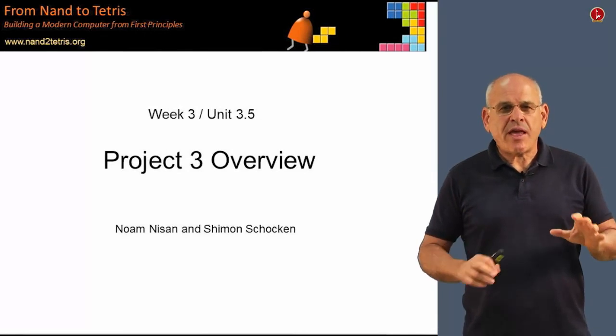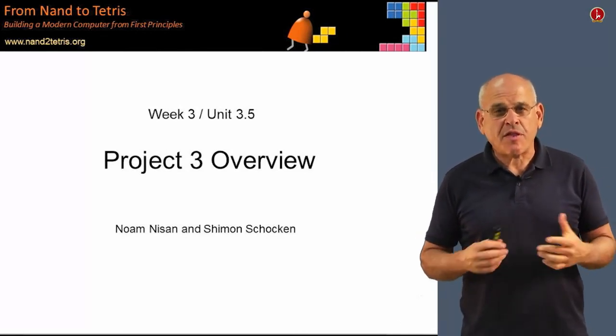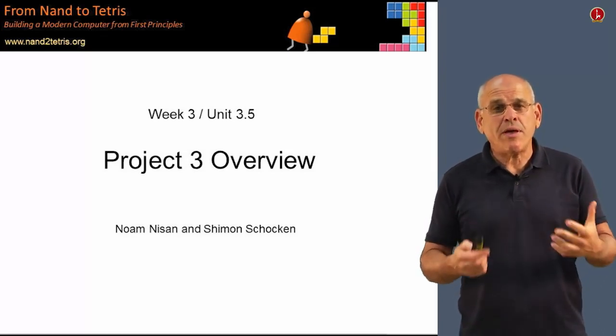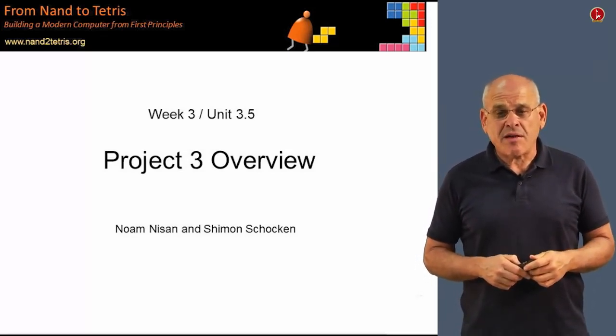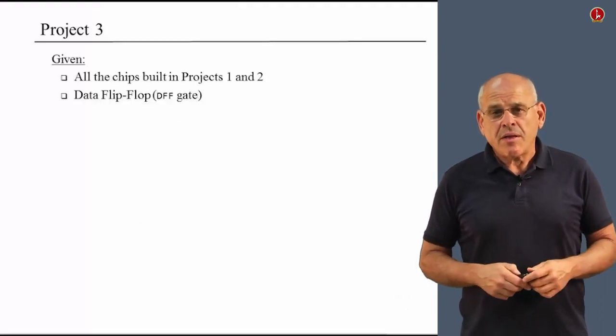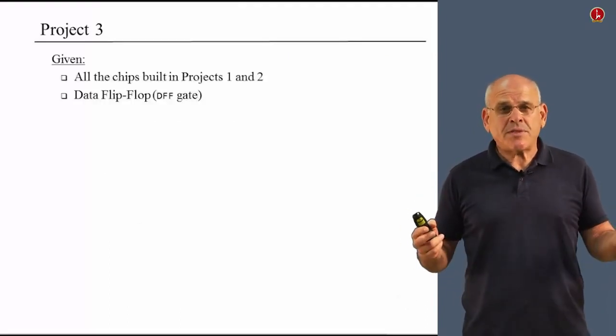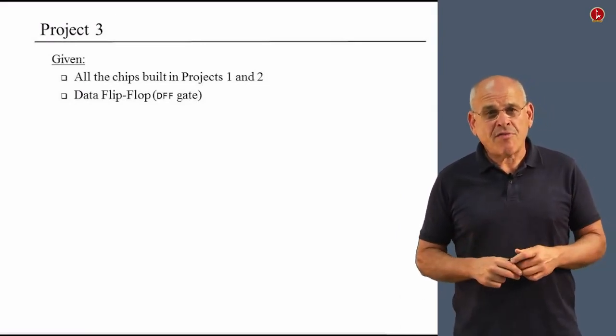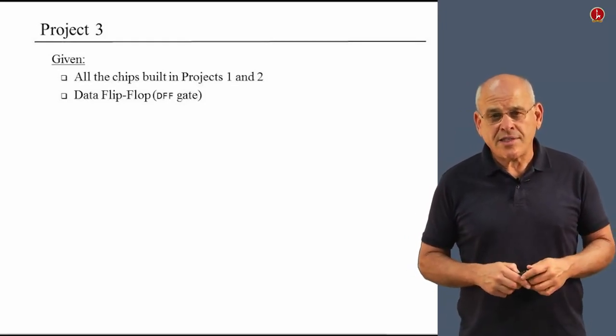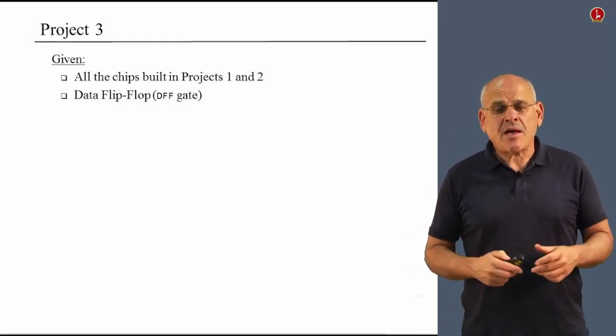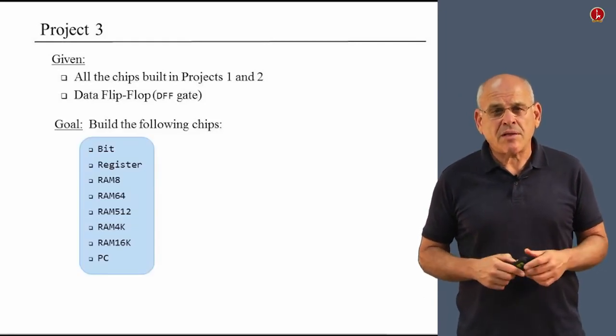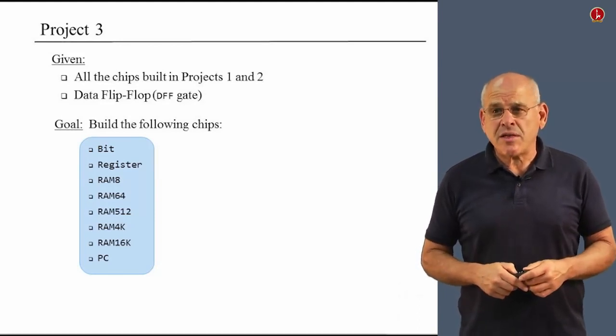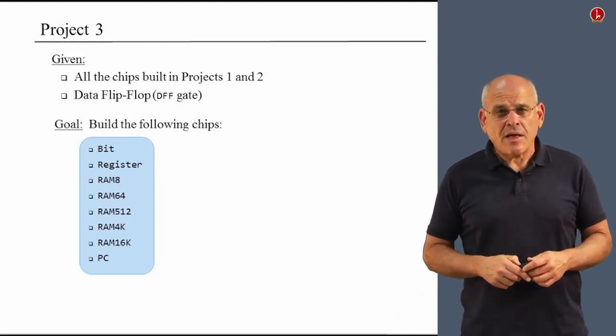We are now in a position to take everything that we learned about the theory and practice of memory devices and actually set out to build chips that implement all this functionality. Project three begins with all the chips that you designed in projects one and two, as well as a primitive data flip flop. We've seen all these chips in one way or another in the previous units, and now we actually implement them.